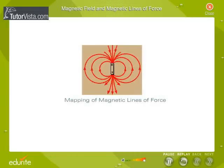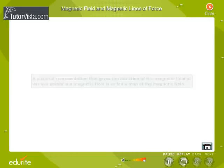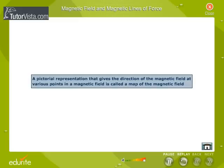Mapping of Magnetic Lines of Force. A pictorial representation that gives the direction of the magnetic field at various points in a magnetic field is called a map of the magnetic field.